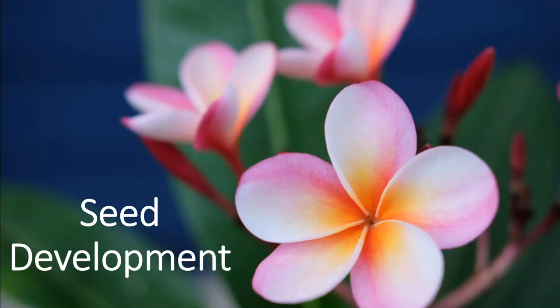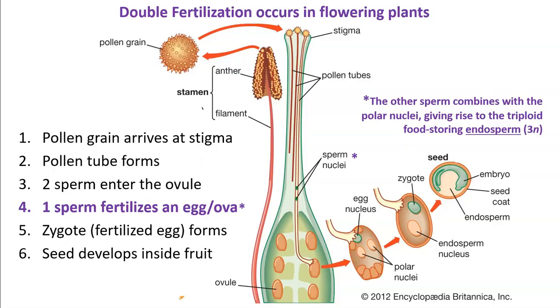In this lesson, we're going to be looking at how seeds develop upon fertilization. We have already discussed how the pollen grain from one flowering plant can arrive at the stigma, which is the top part of the carpel, or the female reproductive organs in the flowering plants.